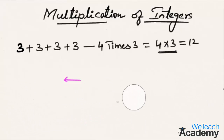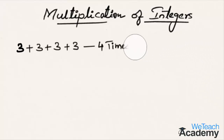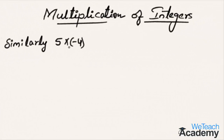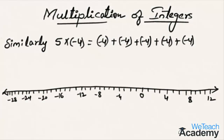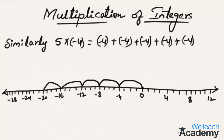Let's proceed with one more example. What will be 5 multiplied by minus 4? This is nothing but 5 times minus 4, that is minus 4 plus minus 4 plus minus 4 plus minus 4 plus minus 4 — five times. On the number line, this is seen as 5 jumps each of 4 steps from 0 towards the left. Taking 5 jumps each of 4 steps towards the left, we reach minus 20. Hence, 5 times minus 4 is minus 20.